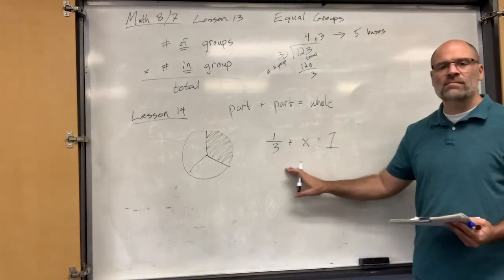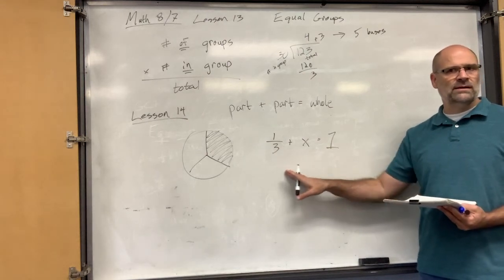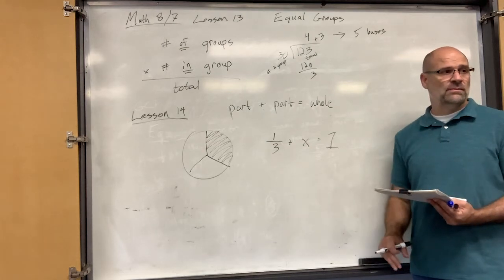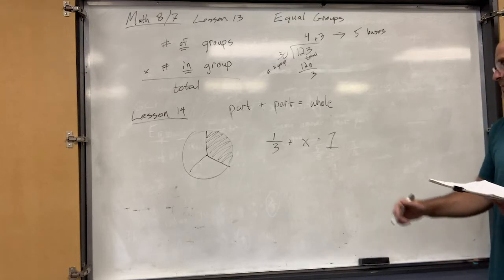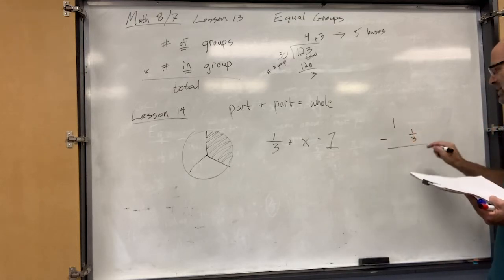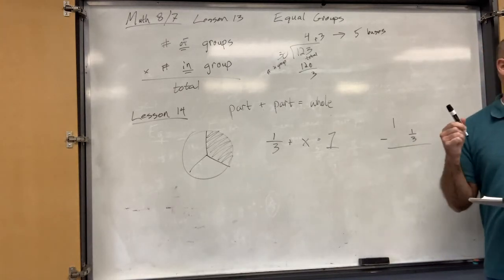So, and it's also a missing number in an addition problem. How do you find the missing add-end in an addition problem? You subtract, right? So one minus one-third. Well, this is kind of over-complicating it because you kind of know, you know the what's left thing, right?